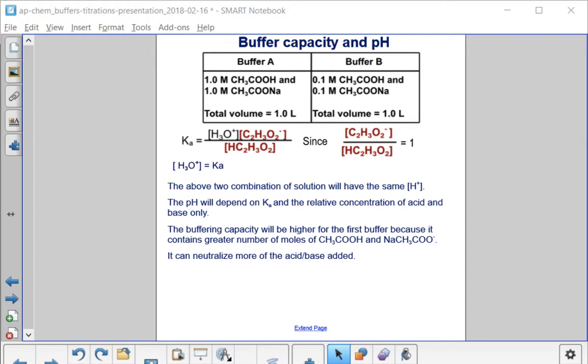Buffer B on the right is 0.1 molar concentrations of both acetic acid and sodium acetate in a total volume of one liter.